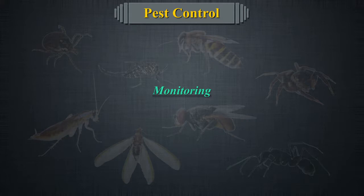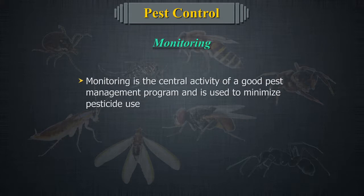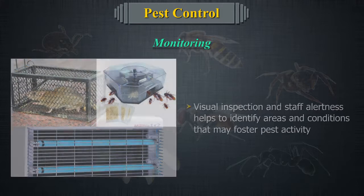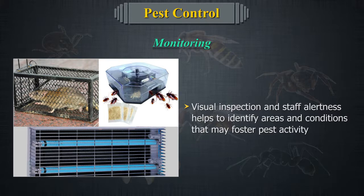Monitoring. Monitoring is the central activity of a good pest management program and is used to minimize pesticide use. Traps, visual inspections, and staff interviews identify areas and conditions that may foster pest activity.